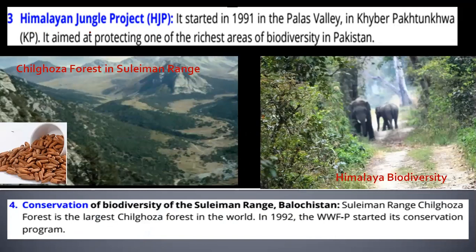The next step is the Himalayan Jungle Project. The Himalayas are the range of mountains toward the northern areas of Pakistan. It is called HJP and was started in 1991 in Palas Valley in Khyber Pakhtunkhwa, in the upper portion of the northern areas. It is aimed at protecting one of the richest areas of biodiversity, because the northern areas have lush green forests as well as peaks and mountains with a great variety of biodiversity. This project works to protect Himalayan biodiversity.